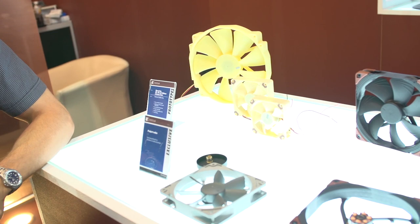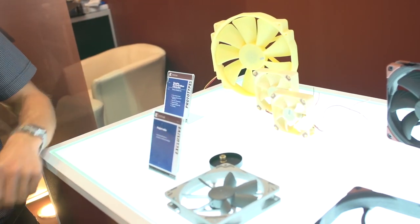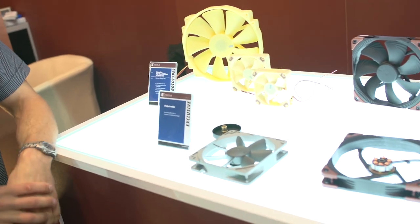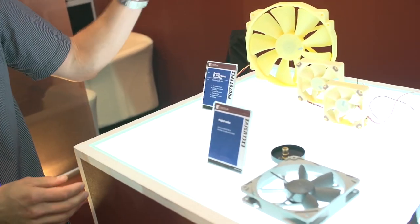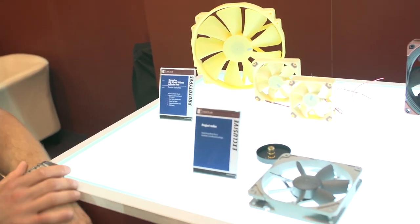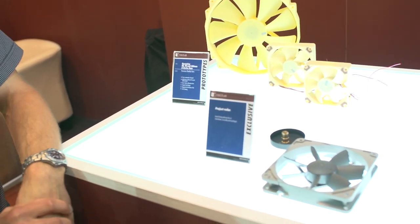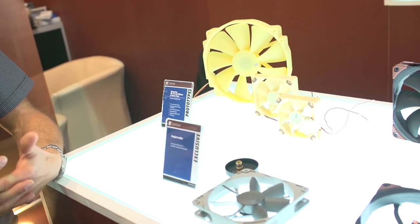First of all, the yellow color is just because they are CNC mock-up prototypes. They will have the normal Noctua color when they're ready. They are new additions to our A-Series fans. We had 140, 92 slim, 60 and 40 in the past and these are going to be 200 millimeter, 92 millimeter with 25 millimeter thickness and 80 millimeter. They will have all the features of the A-Series you already know like flow acceleration channels and SSO2 bearings.